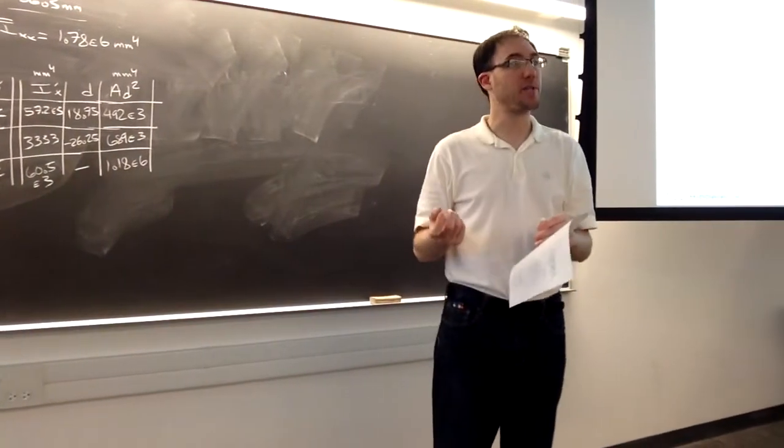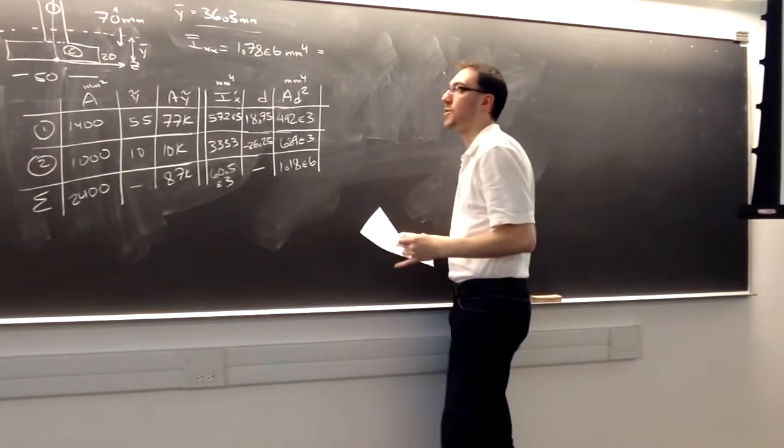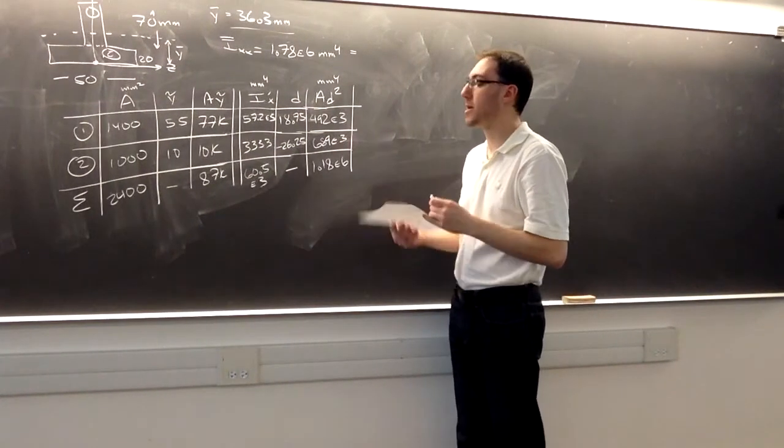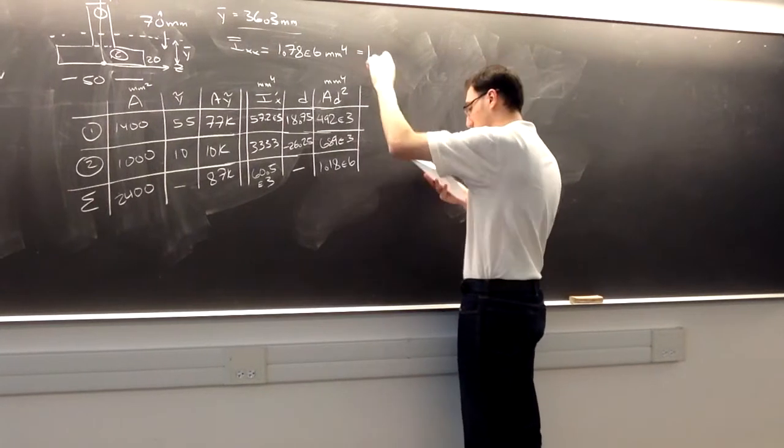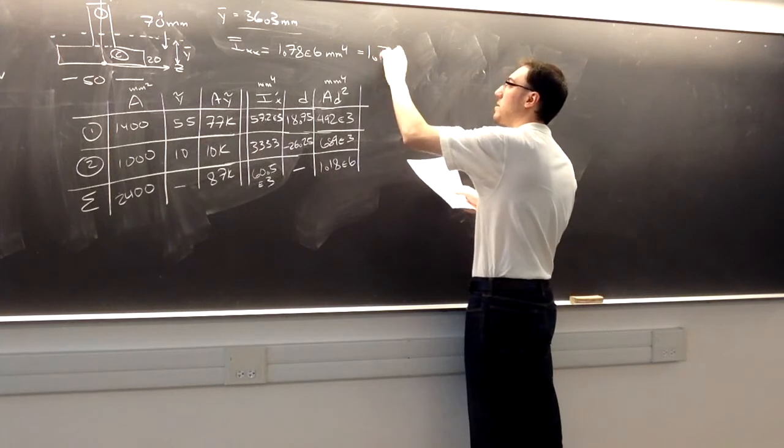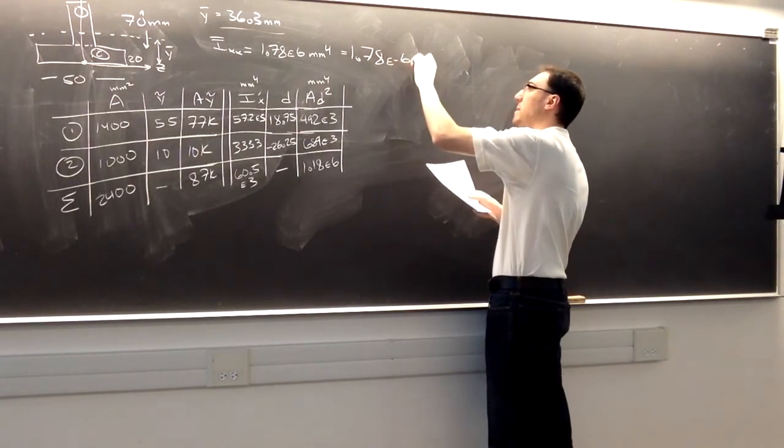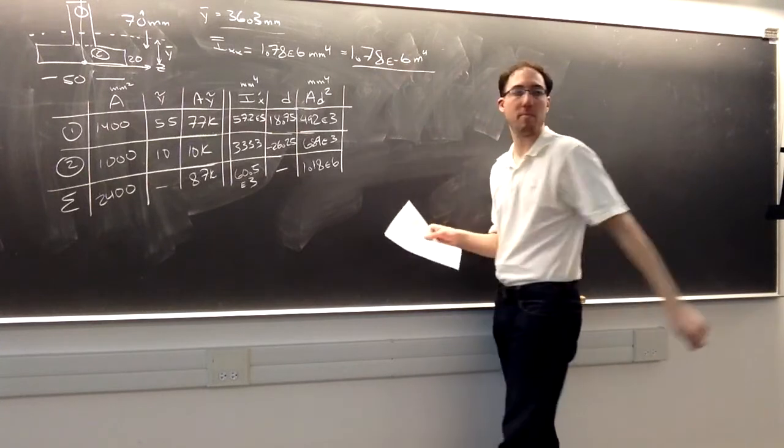But as we saw with the bending problems, we want everything in our standard unit. So we're going to put this into meters, which will be 1.78 times 10 to the negative sixth meters to the fourth power.